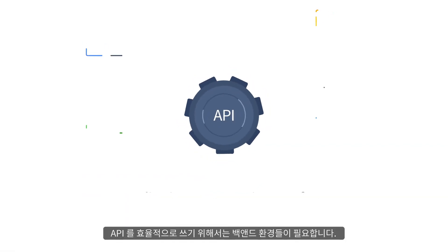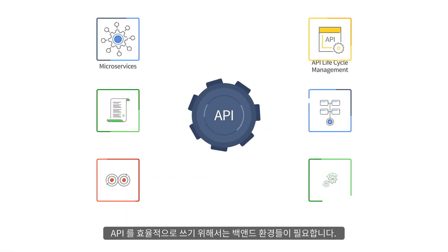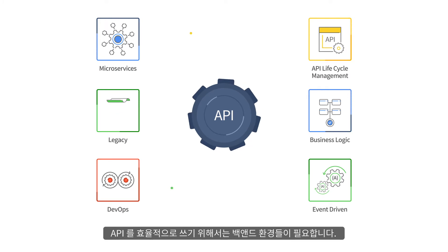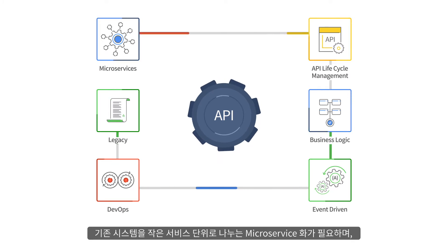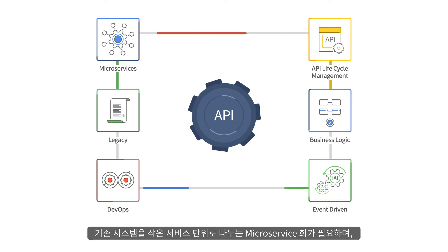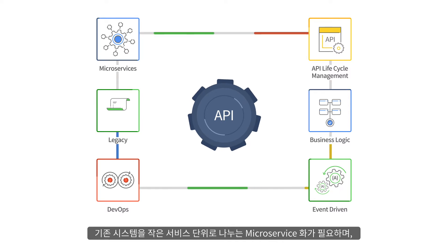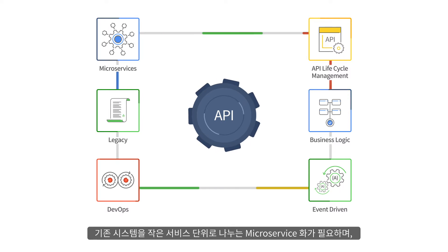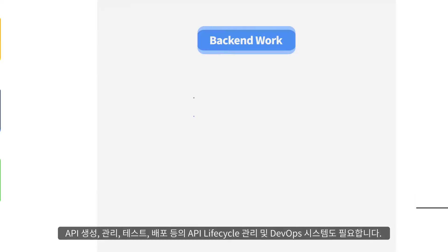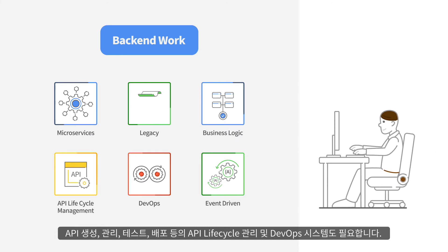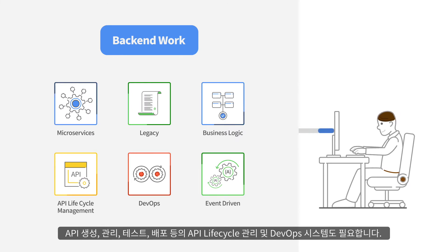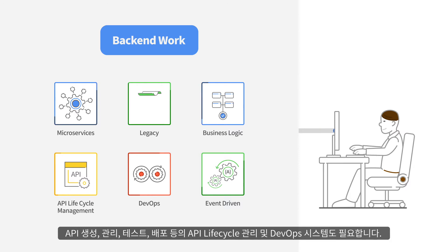In order to use APIs more efficiently, you need certain backend environments. You need a microservice environment which divides your legacy into smaller service units. You will also need API lifecycle management and a good DevOps system that can take care of API creation, management, testing, and deployment.